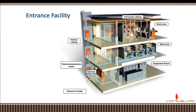In a given building, the entrance facility is basically located at the entrance of the building or on the ground floor, where the network infrastructure being managed by the systems administrator starts. On this diagram, the entrance facility is the entrance of the office or the organization, which is on the ground floor.